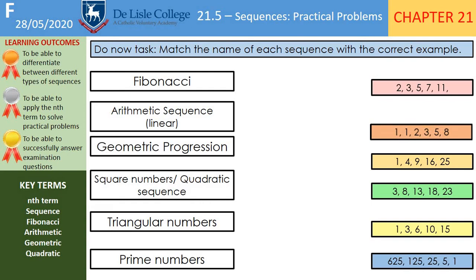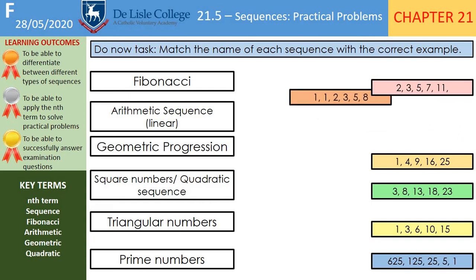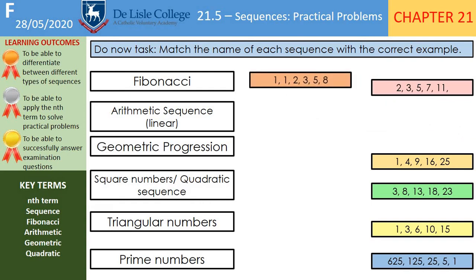Fibonacci should have matched the red sequence, because we know Fibonacci is the two previous terms added together to make the next one. So 1 plus 1 is 2, 1 plus 2 is 3, 2 plus 3 is 5. Then we're looking for an arithmetic sequence.